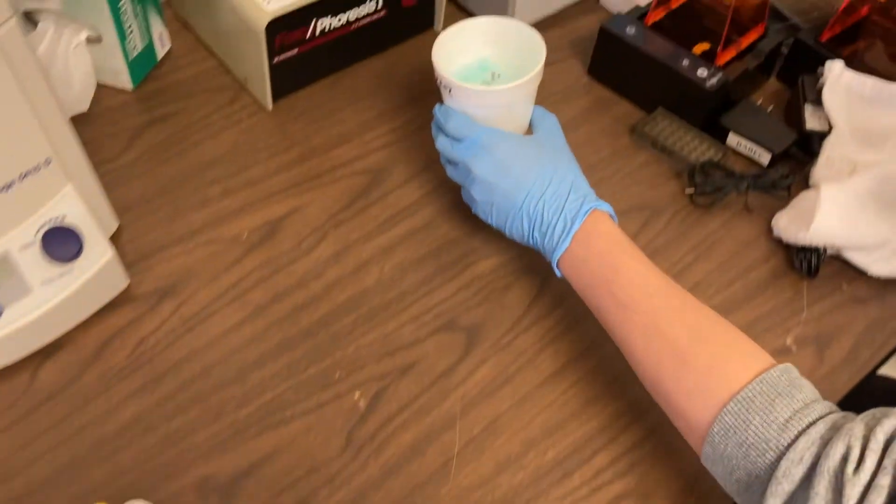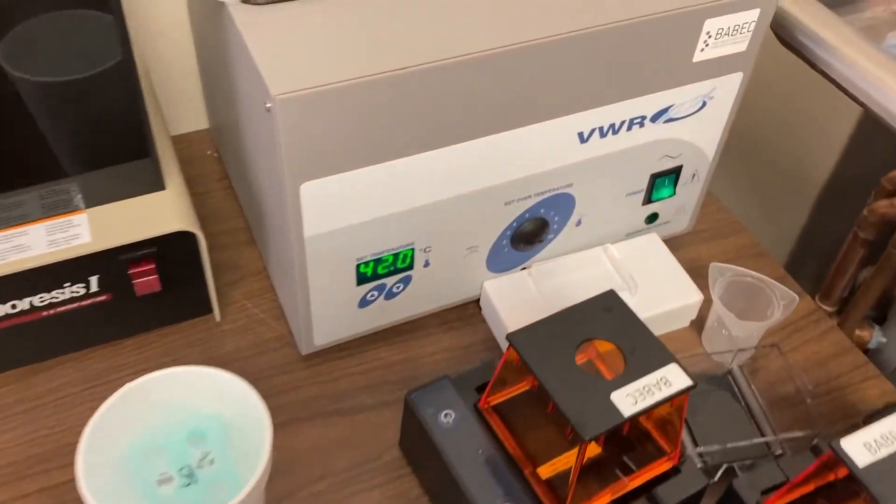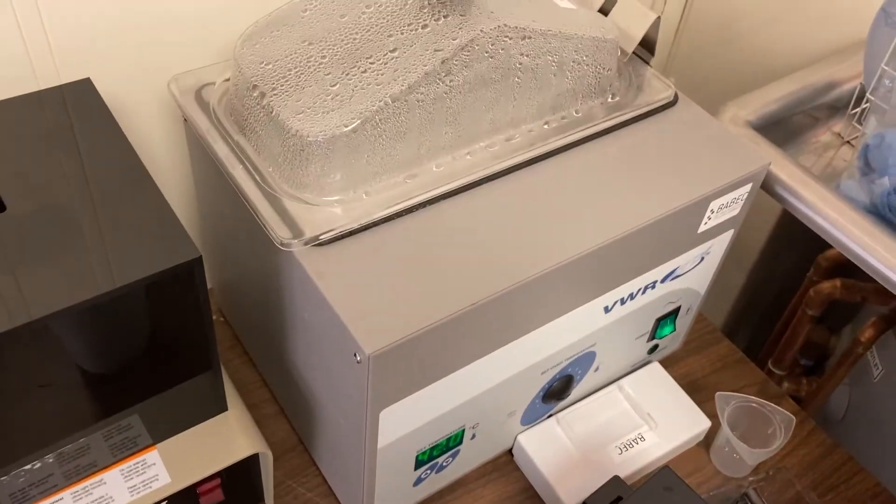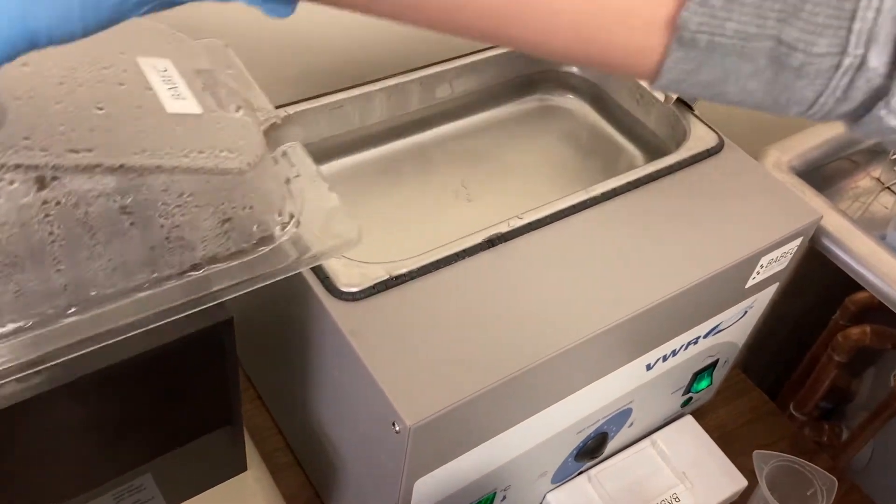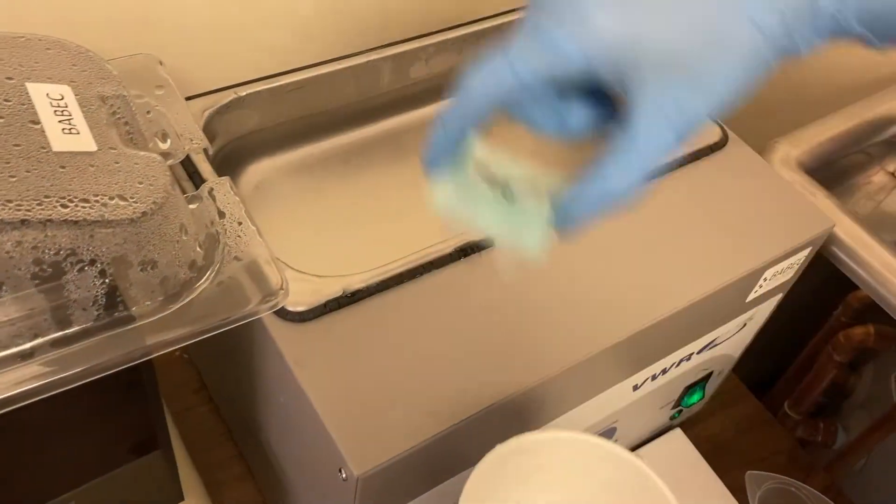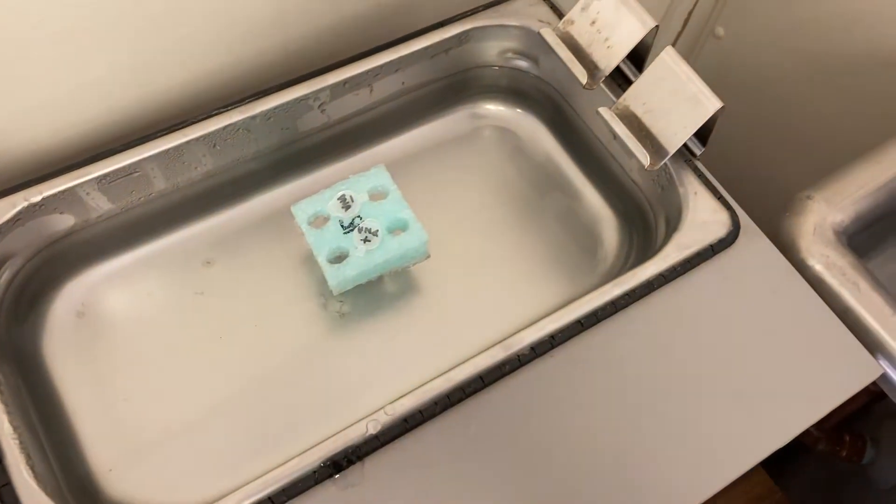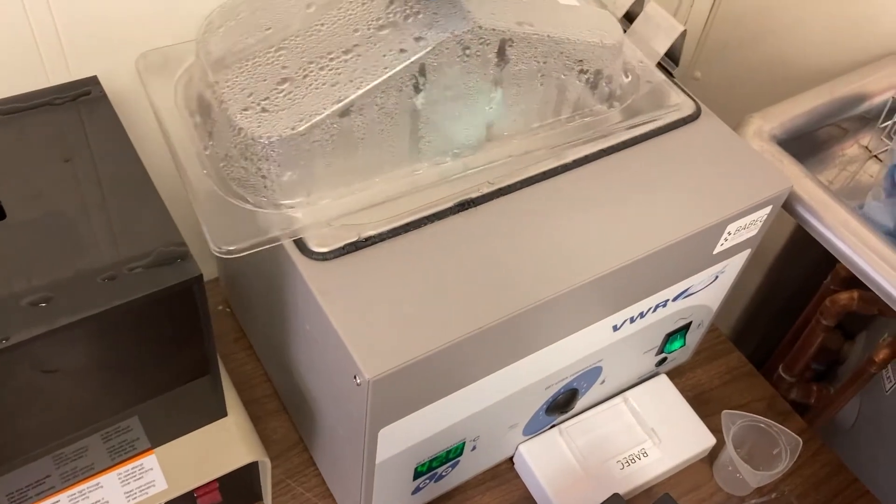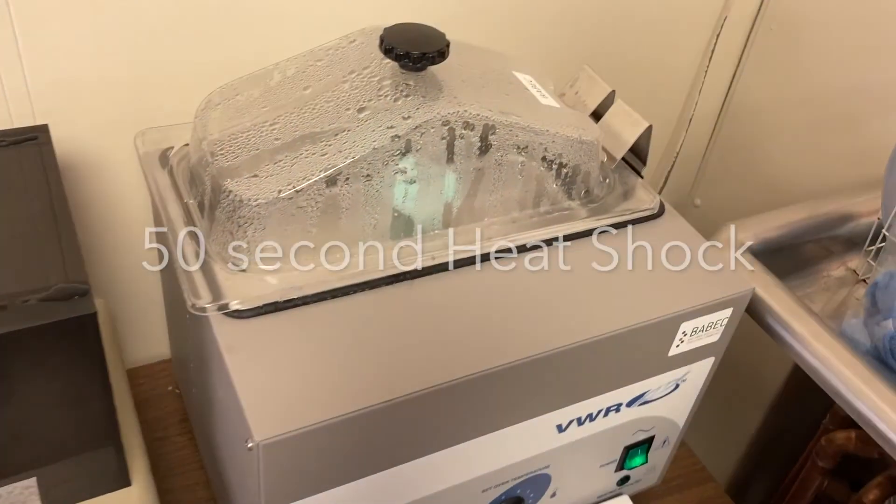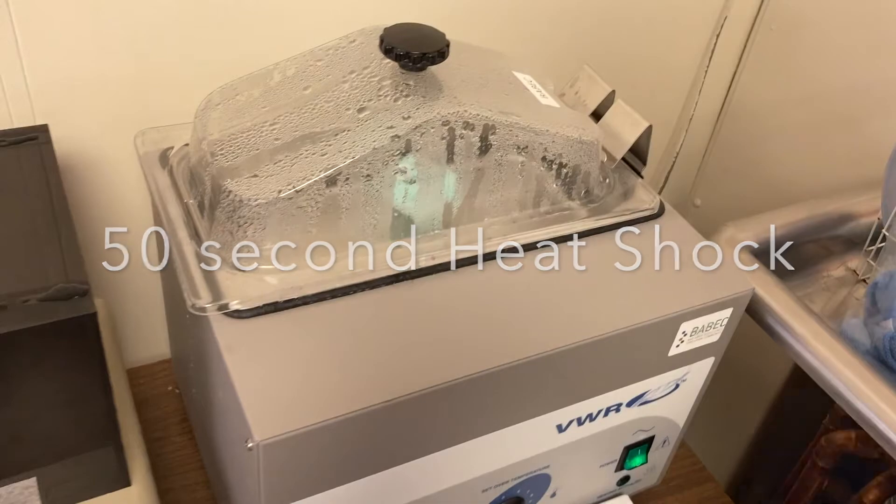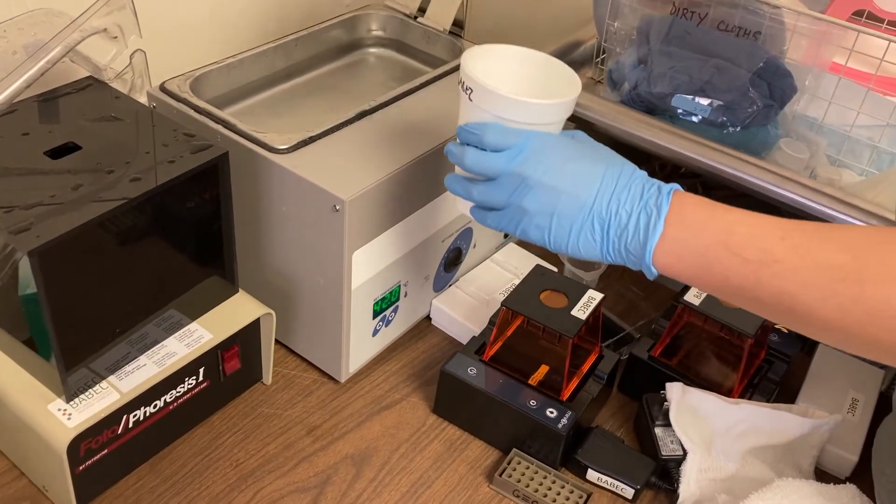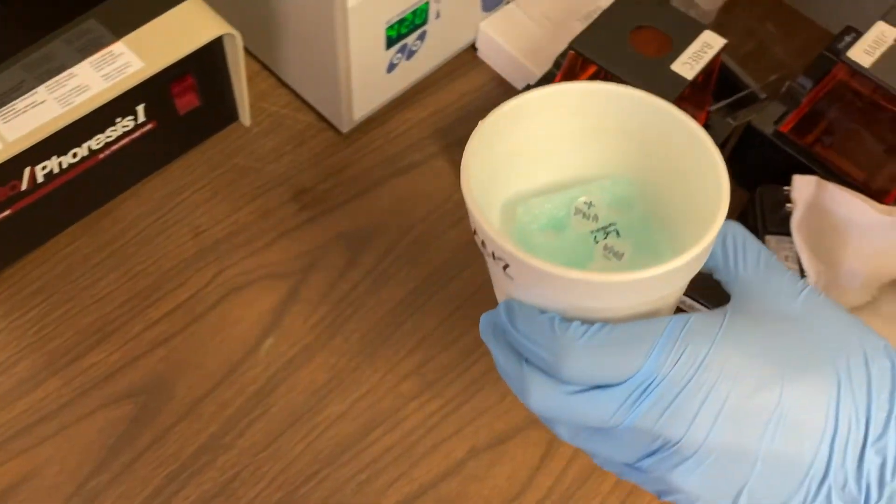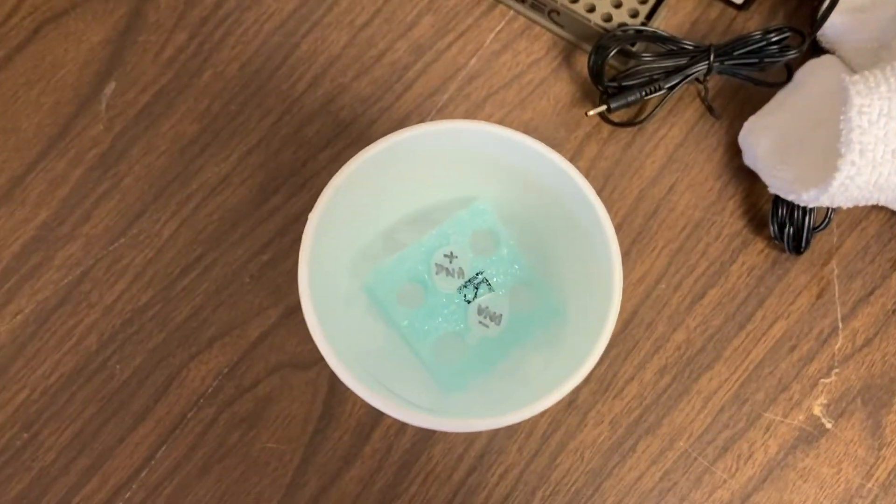After 10 minutes on ice, you bring your cup over to the water bath for the next step, which is something we call the heat shock. You see that it's at 42 degrees Celsius, which is actually quite warm. You're going to take your floaty or float both tubes into the water bath. We're going to do this for exactly 50 seconds. When your 50 seconds is up, take your tubes out of the water bath and put them immediately back into your ice. We're going to leave it here for two minutes.